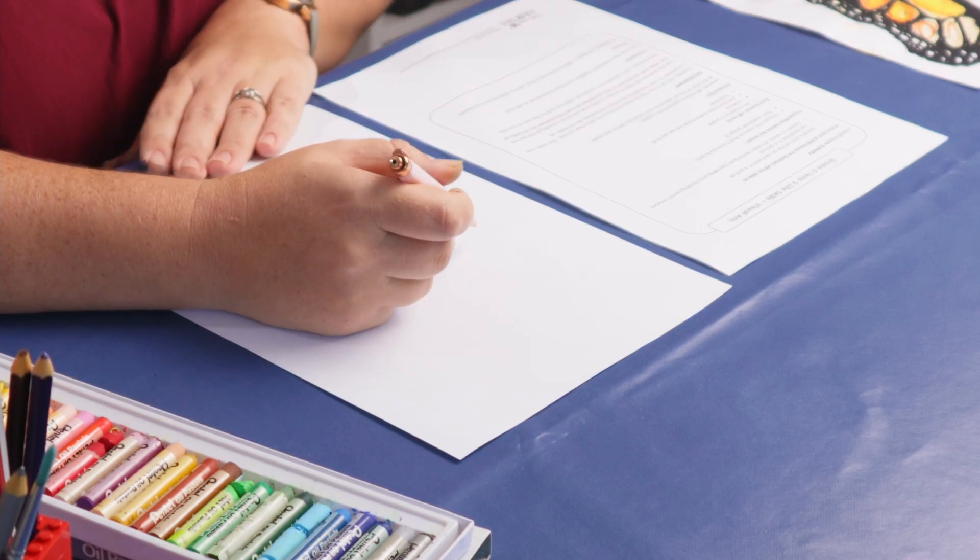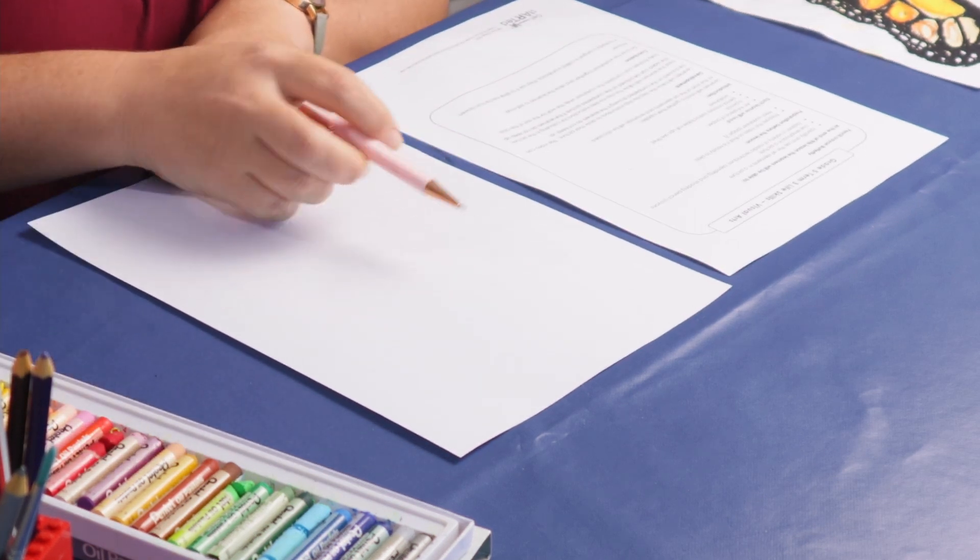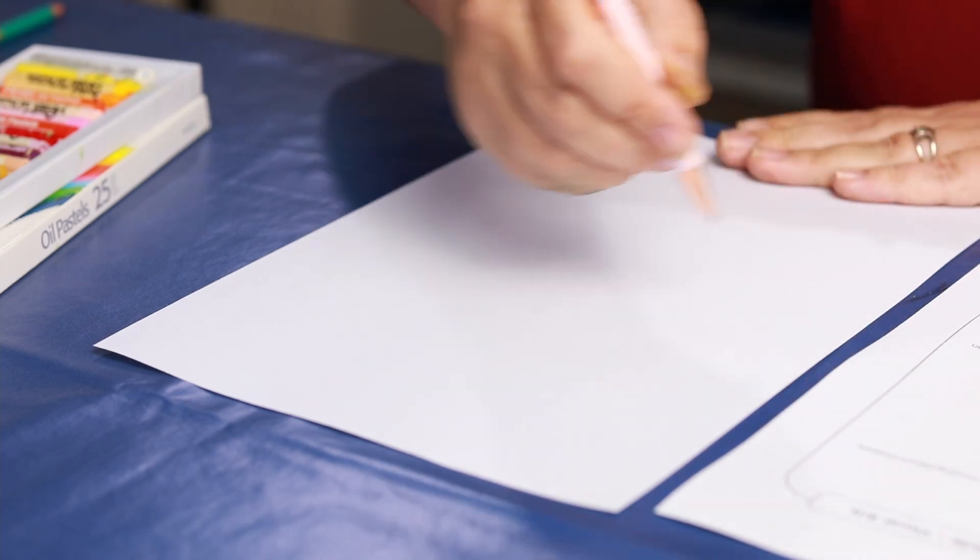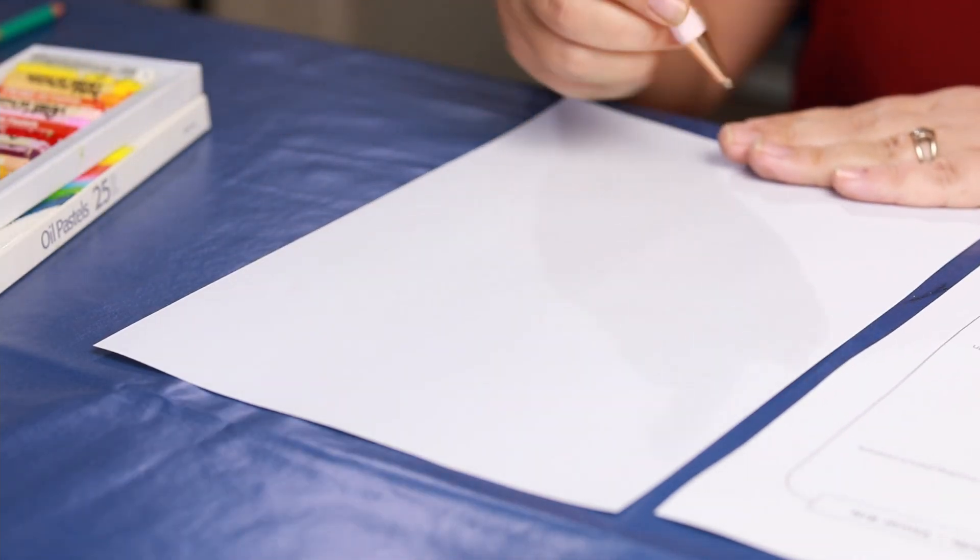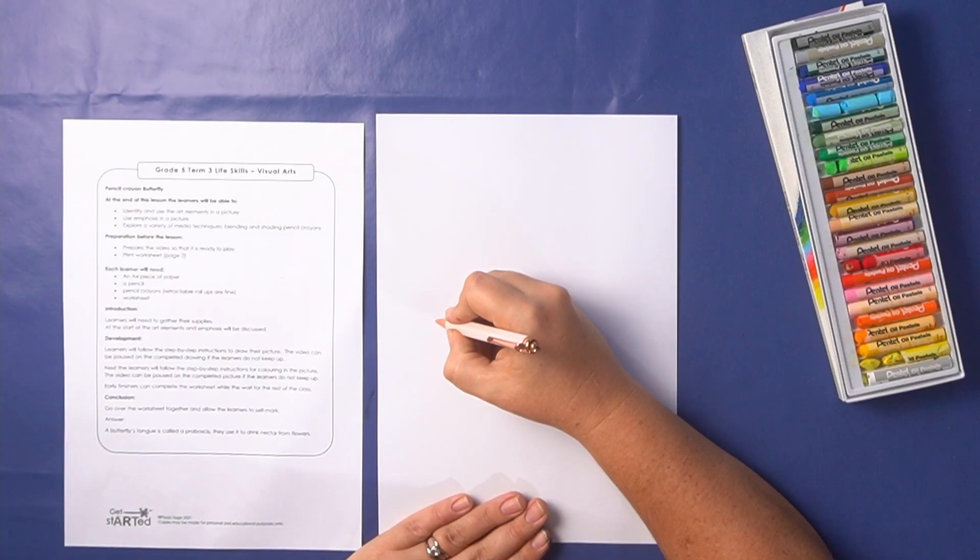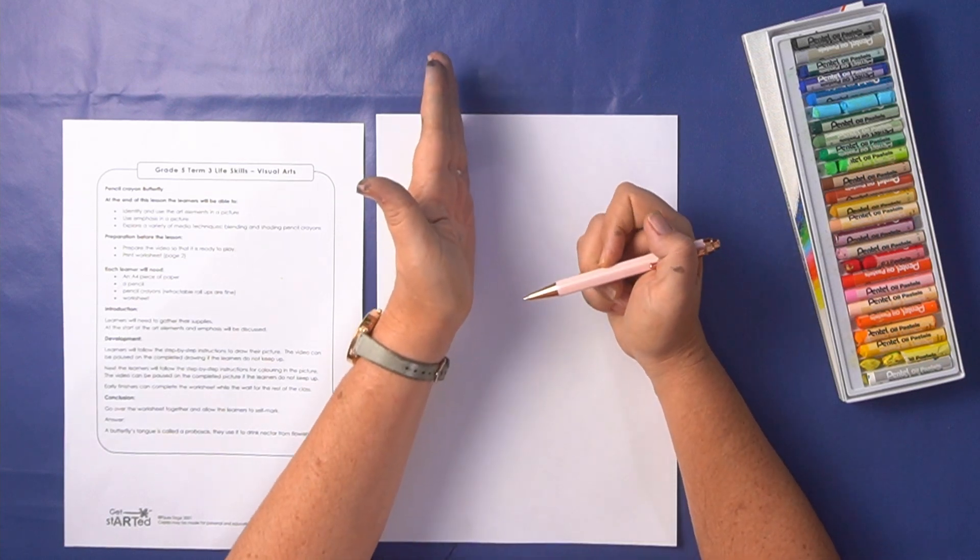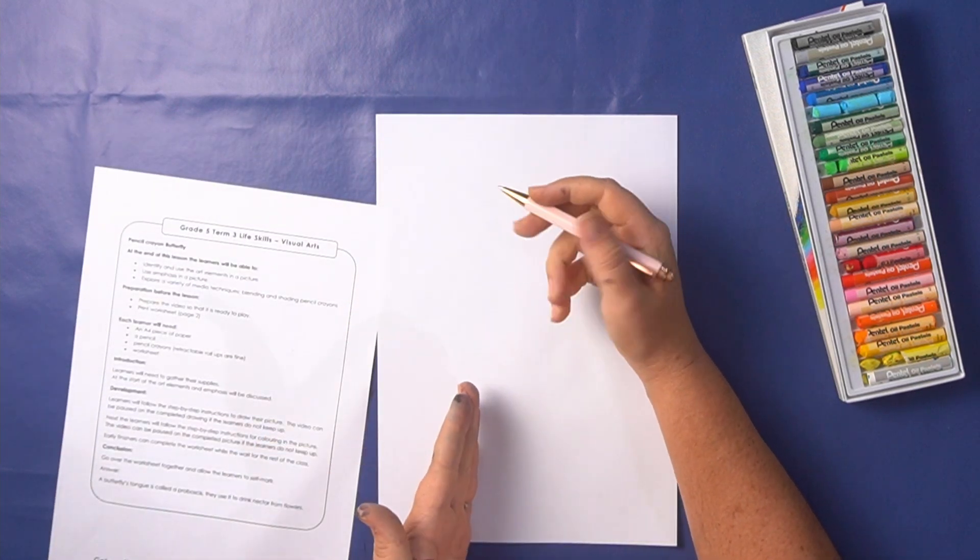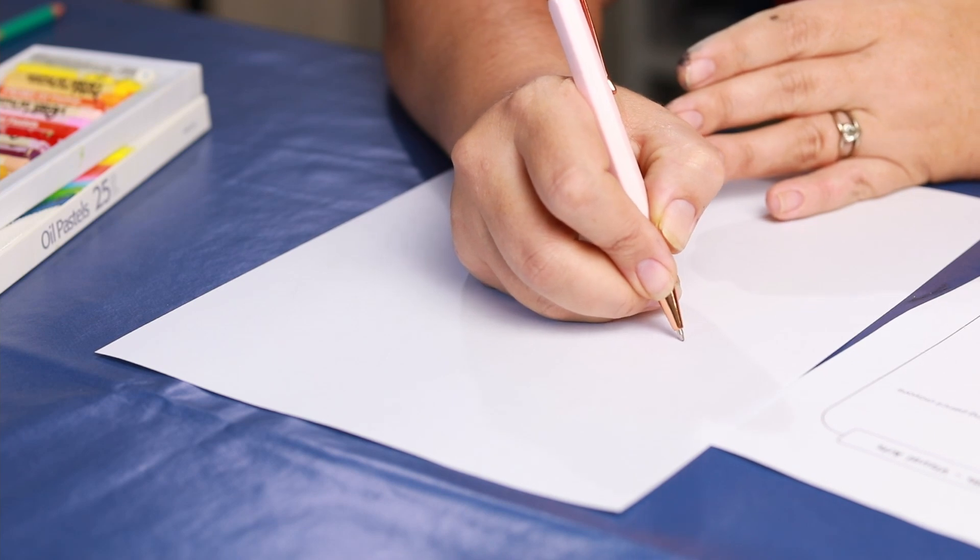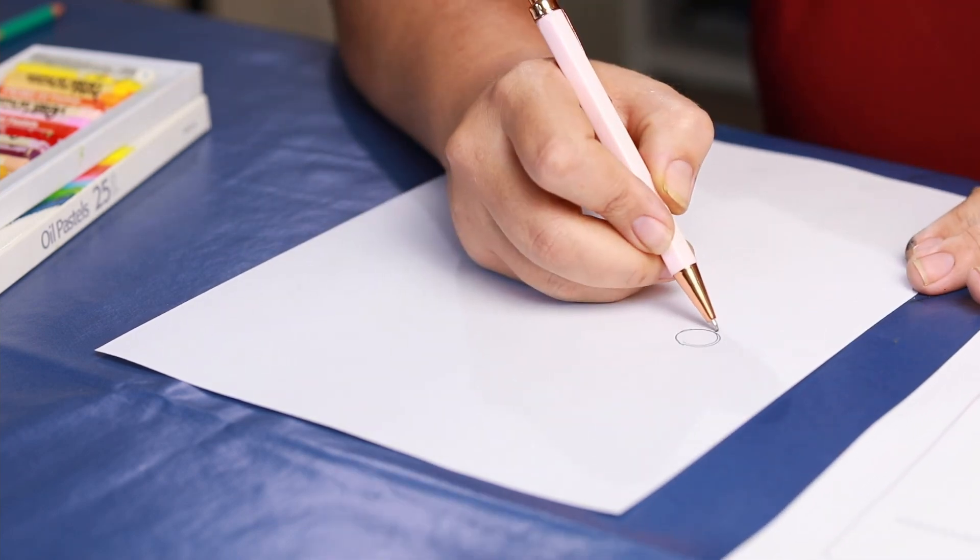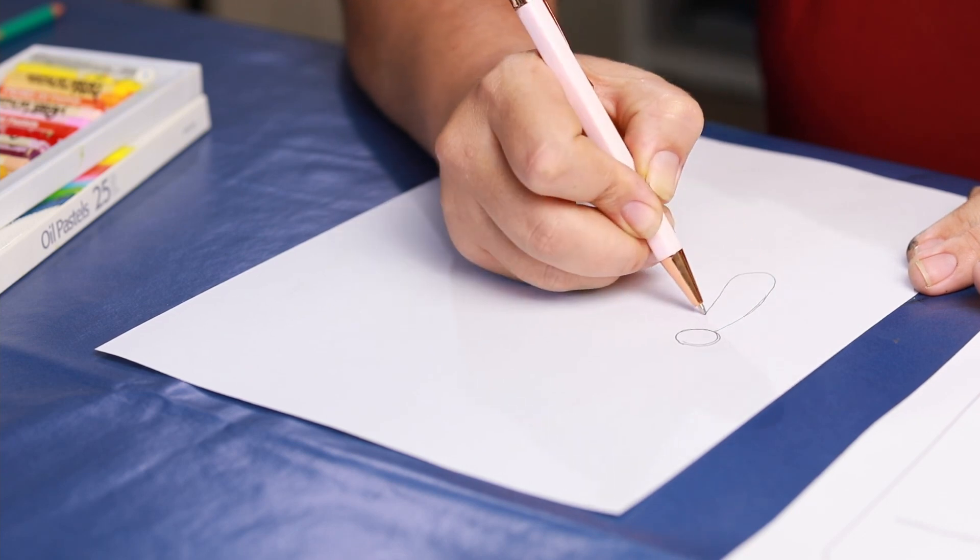Now we're going to start with the butterfly's body and we want it to be on the left hand side of the page because remember we are emphasizing these great big butterfly wings so they should take up most of the page. So on the side of your page, maybe a third of the way through, I'm going to draw my circle for the butterfly's head and then a nice long skinny oval for the butterfly's body.